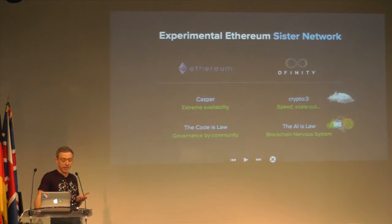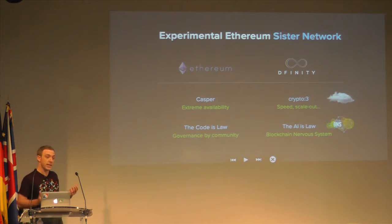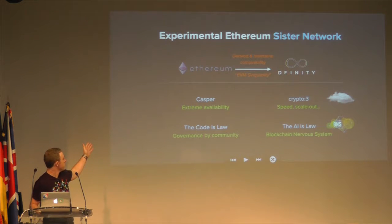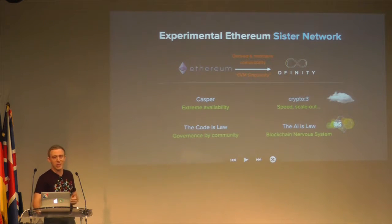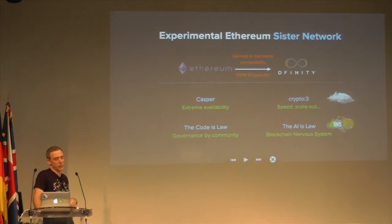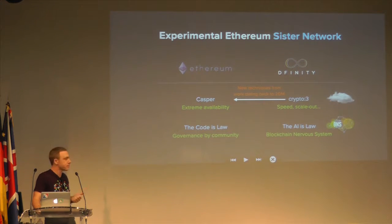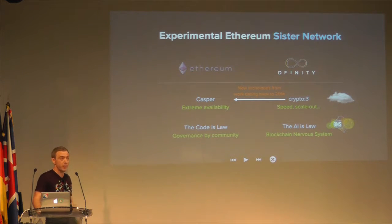We conceived DFINITY as a sort of experimental sister network for Ethereum, which means it's completely compatible with Ethereum. We want to maintain compatibility and drive towards what we term the EVM singularity, where every network is running the EVM and people can just develop dApps for the EVM and run them on different kinds of platform. Crypto3 is obsessed with speed and scale-out; Casper at the moment is more interested in extreme availability. But many of the techniques we've developed in Crypto3 can make their way into Ethereum.